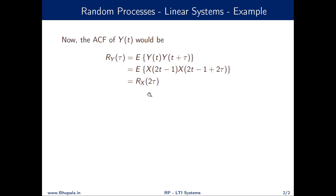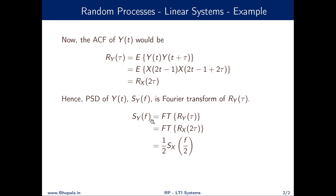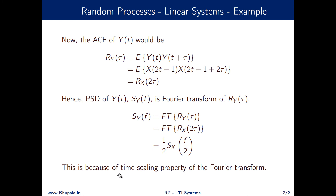We now find the power spectral density of Y(t), which is the Fourier transform of RY(τ). Since RY(τ) = Rx(2τ), we take the Fourier transform of Rx(2τ). Invoking the time-scaling property of the Fourier transform, we get SY(f) = (1/2)·SX(f/2). This is the final result for the power spectral density of the process Y(t).